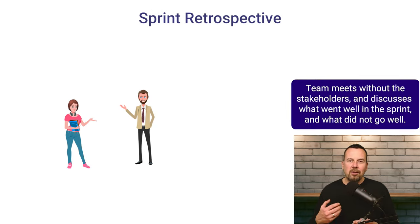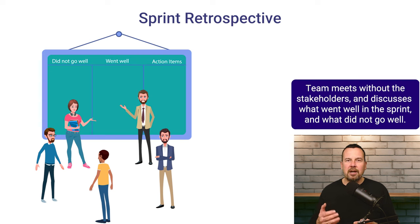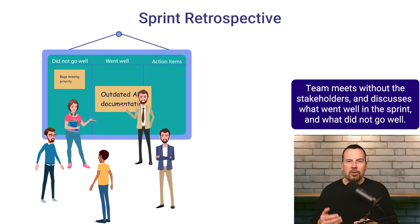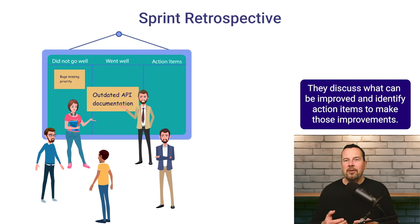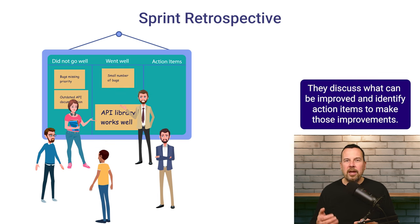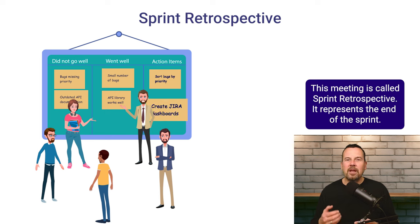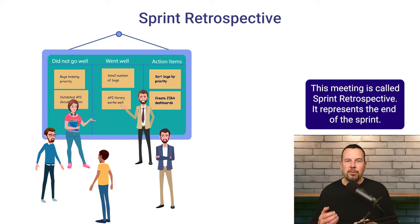Finally, the whole team gets together one more time — this time without the stakeholders — and discusses how the sprint went, what went well, and what did not. They also discuss what can be improved and identify any action items to make those improvements. This is called a sprint retrospective, and it represents the end of the sprint.